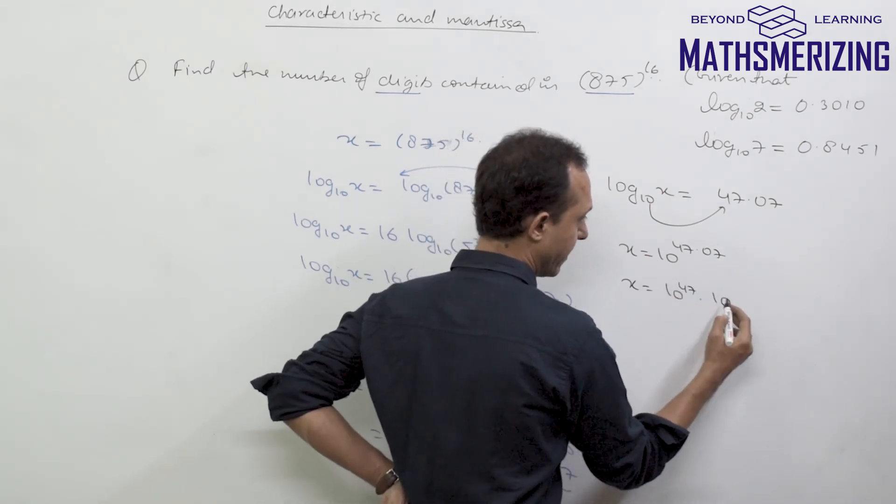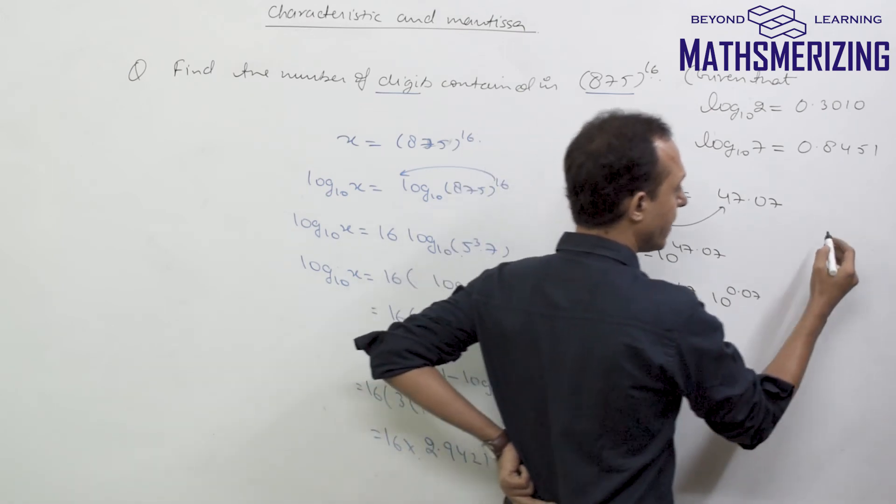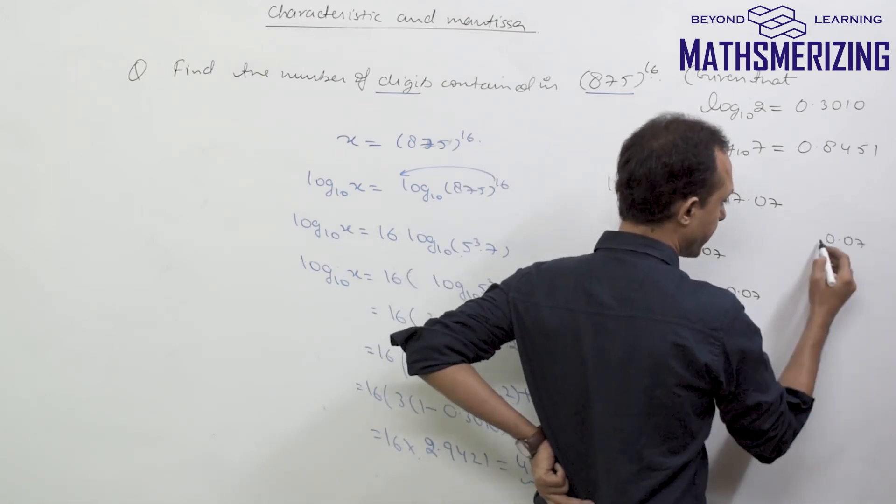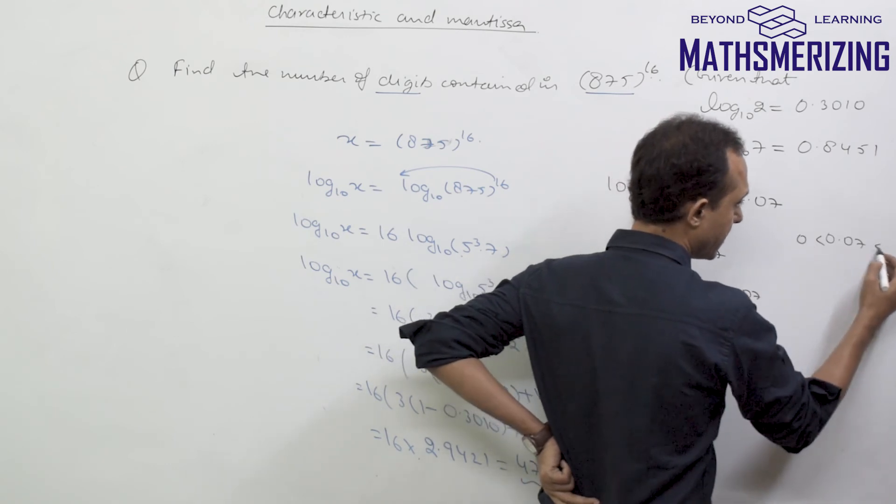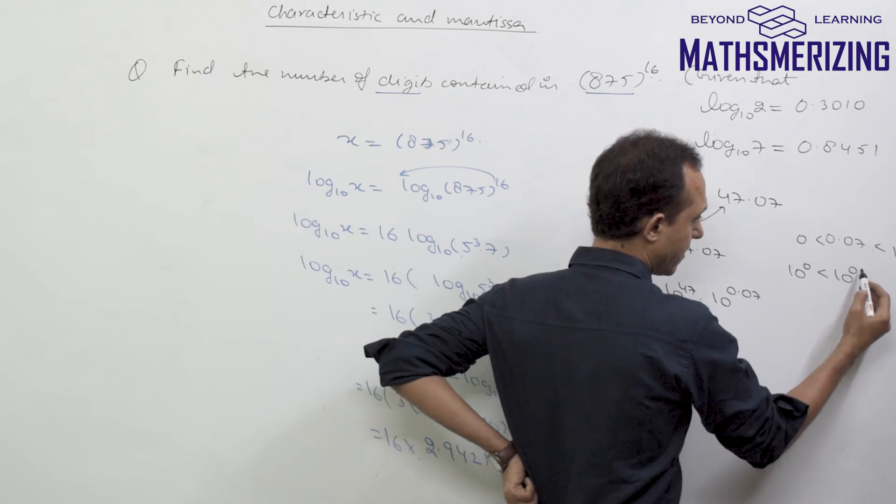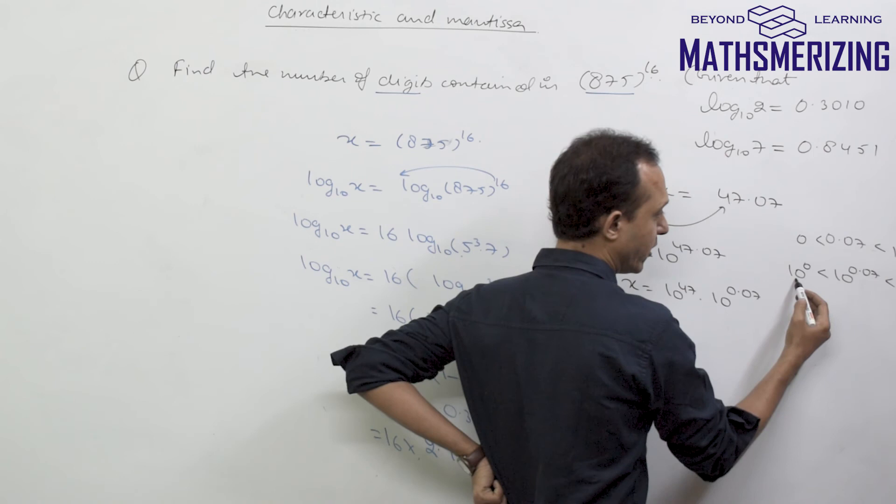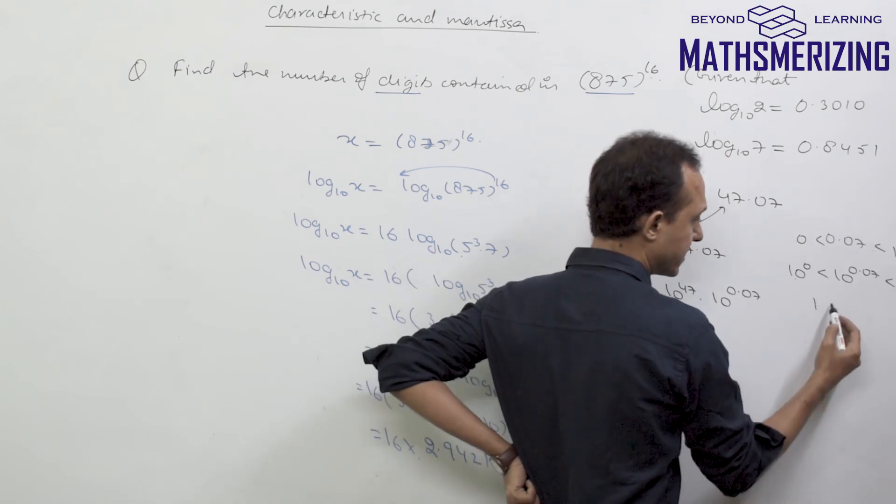This is 10 to the power 47 times 10 to the power 0.07. Now 0.07 actually lies between 0 and 1, so 10 to the power 0.07 will lie between 10 to the power 0 and 10 to the power 1, which means this value lies between 1 and 10.